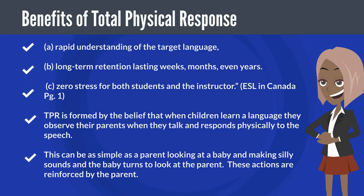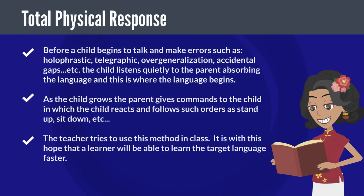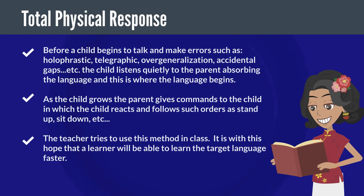TPR is formed by the belief that when children learn a language, they observe their parents when they talk and respond physically to the speech. This can be as simple as a parent making silly sounds and the baby turning to look at the parent, with these actions reinforced by the parent. Before a child begins to talk and make errors such as holophrastic, telegraphic, overgeneralization, accidental gaps, etc., the child listens quietly, absorbing the language — and this is where language begins.